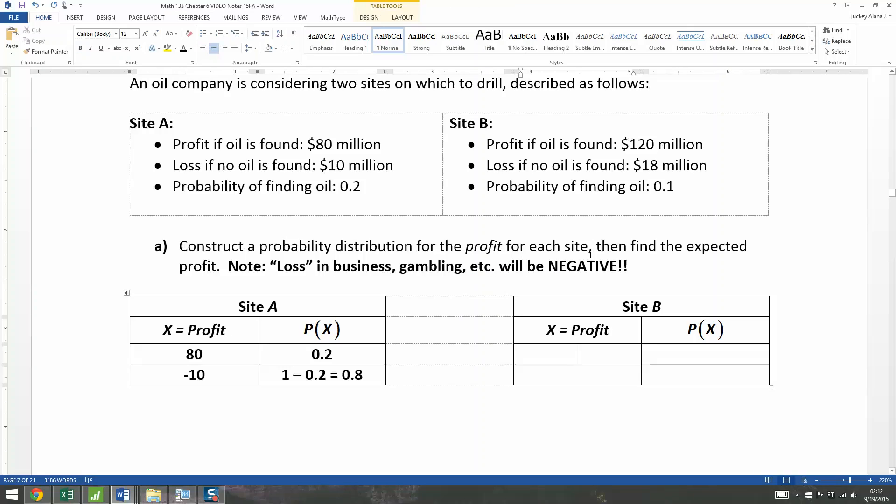Now let's do it for site B. The profit if they find oil is 120. But the loss, there it is that word again, it's negative 18. And the probability of finding oil is 0.1. Well, again, you either find oil or you do not. So it's 1 minus 0.1, which is 0.9 for the probability of not finding oil. They're complements. I'm using the complement rule from chapter five.